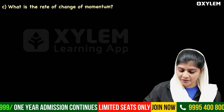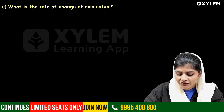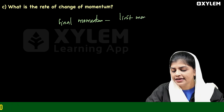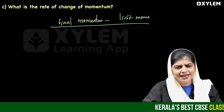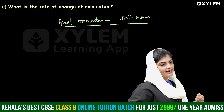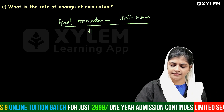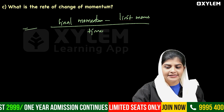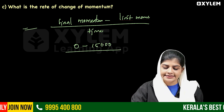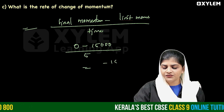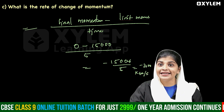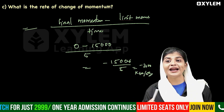What is the rate of change of momentum? Change in momentum equals final momentum minus initial momentum. Rate of change of momentum equals change in momentum divided by time. That is 0 minus 15,000 divided by 5, which gives minus 3,000 kilogram meter per second squared.